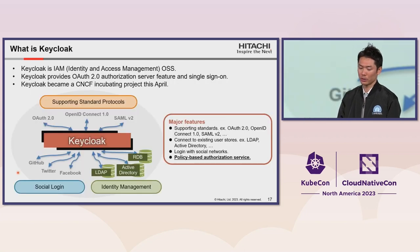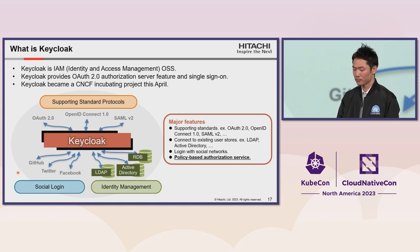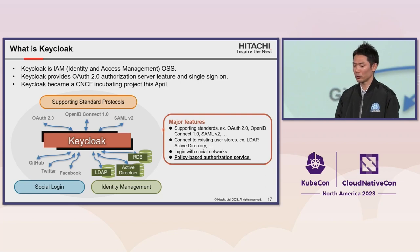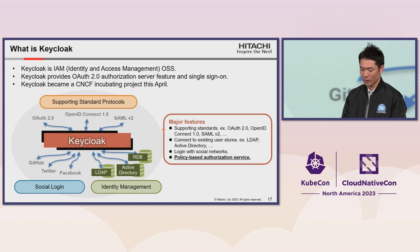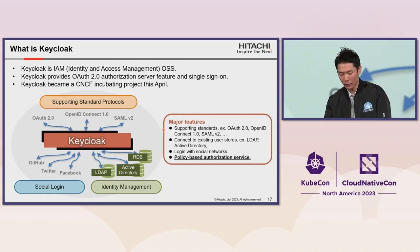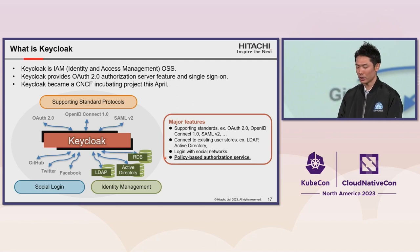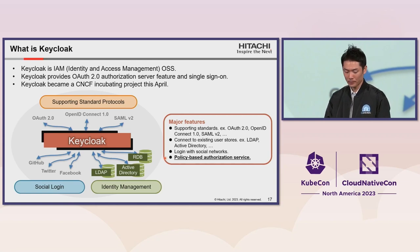Keycloak is an Identity and Access Management OSS that provides OAuth 2.0 authorization server features and single sign-on features. Keycloak became a CNCF incubating project this April. The four main features are: first, Keycloak supports standards such as OAuth 2.0, OpenID Connect, and SAML; second, Keycloak can connect to existing user stores like LDAP and Active Directory; third, Keycloak can log in with social networks such as GitHub, Twitter, and Facebook; and finally, Keycloak provides a policy-based authorization service.